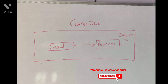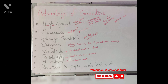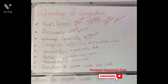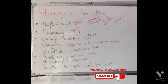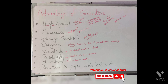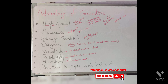What are the advantages of a computer and how is it advantageous for us? The advantages include high speed, accuracy, storage capability, diligence, versatility, reliability, automation, and reduction in paperwork and cost.